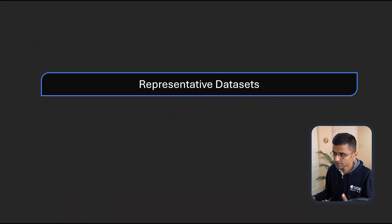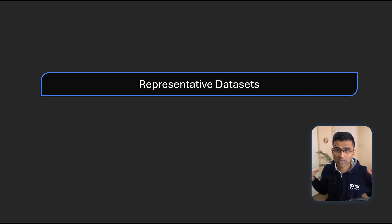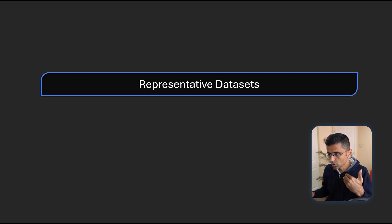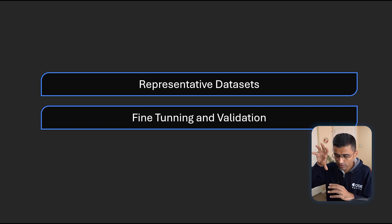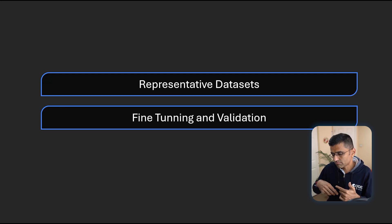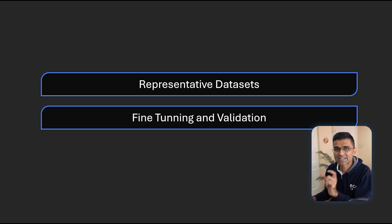So how do you tackle hallucination? The first approach is a representative dataset — having a huge volume of data that covers all the scenarios. You can also do fine-tuning and validation, where you train a model and constantly get feedback. In ChatGPT, you see the thumbs up and thumbs down buttons — that is how they collect feedback, and based on that feedback, they continuously fine-tune the model. Maybe five years down the road it will keep getting better with less hallucination.